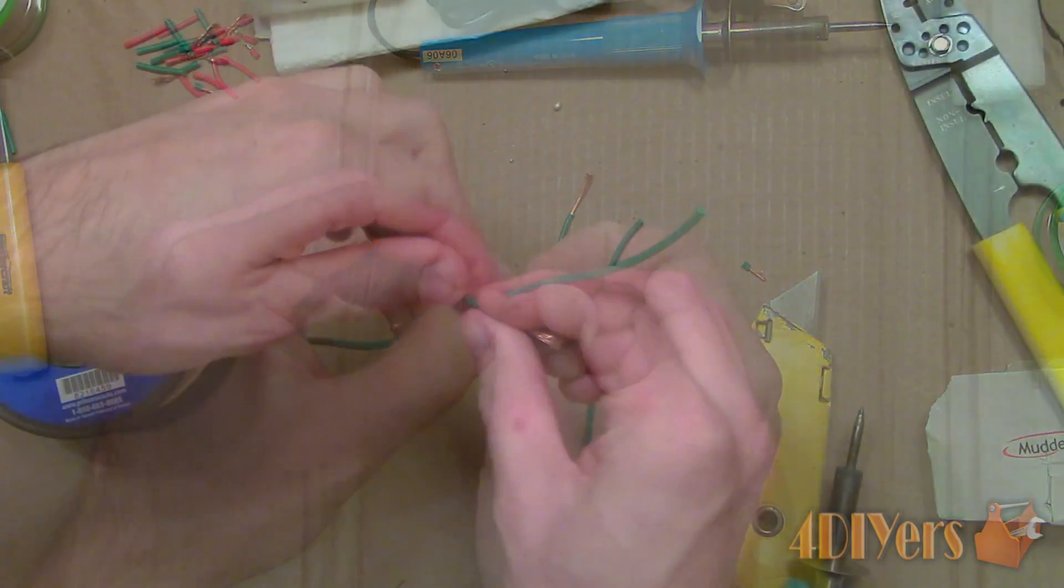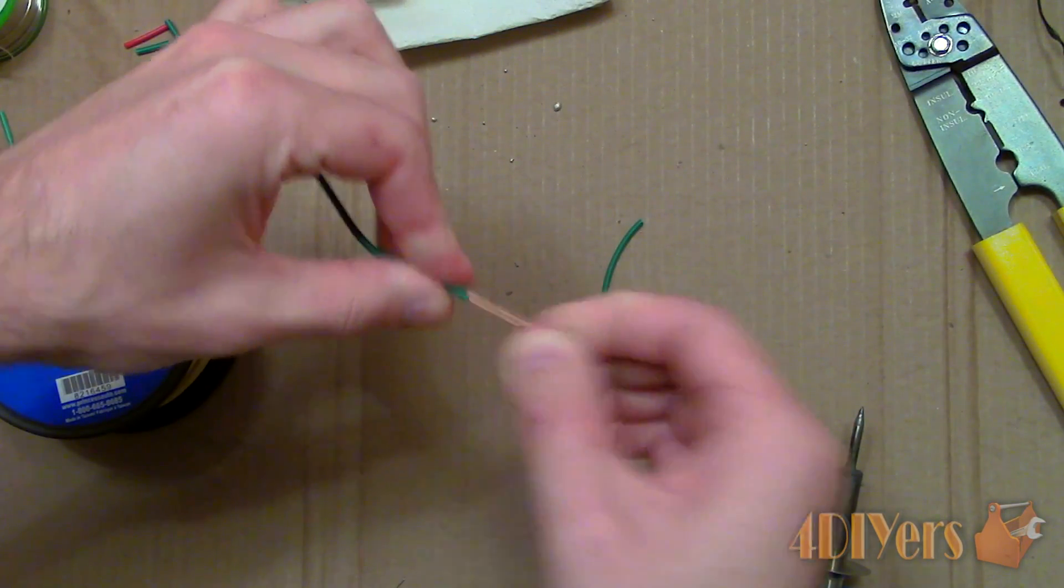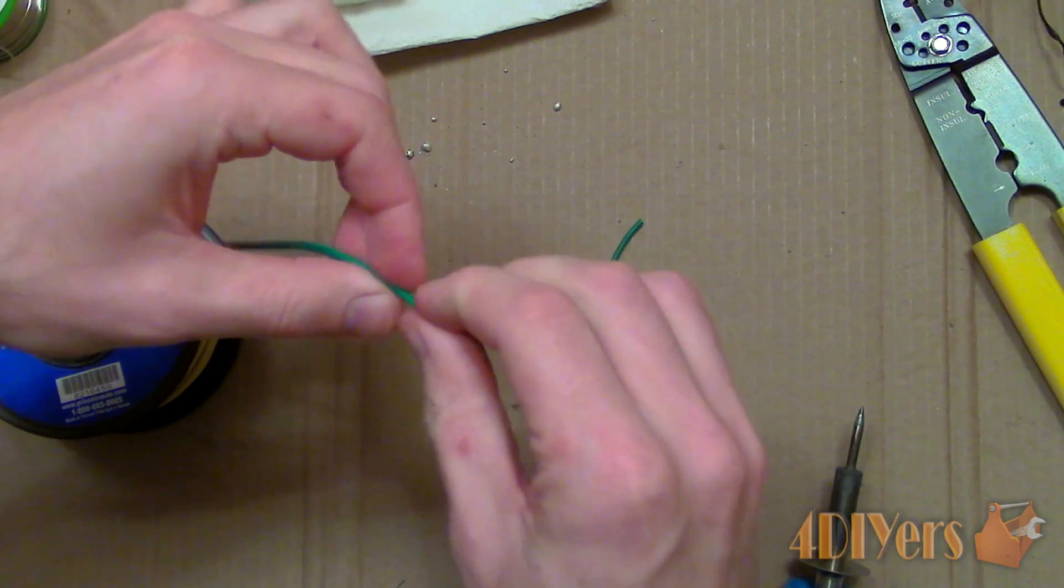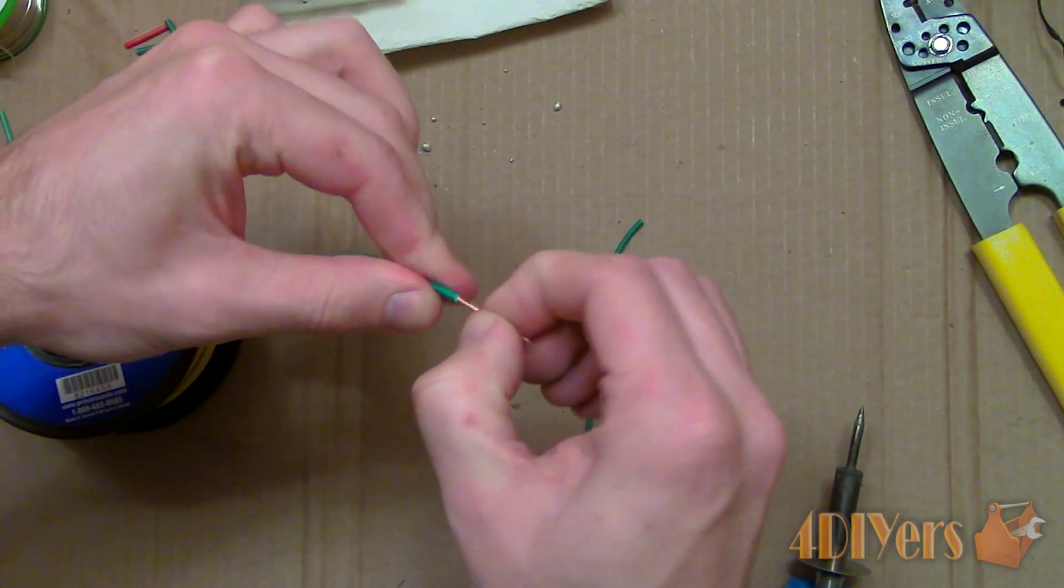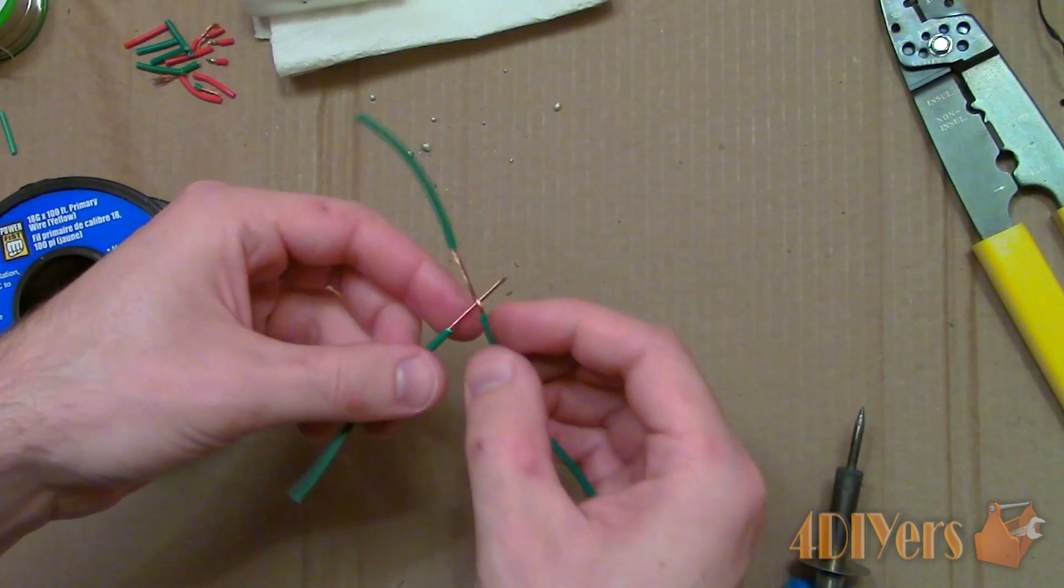Remove about 3 quarters of an inch of insulation back on both pieces of wire. If you are working with solid wire, intercept the new wire at 90 degrees, wrap it around tightly to the existing wire. If you are working with stranded wire, the wire can be separated into two sections if you desire but isn't required.